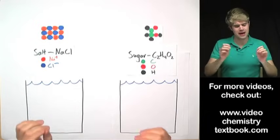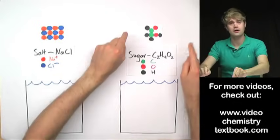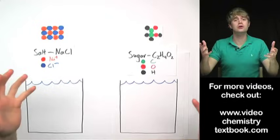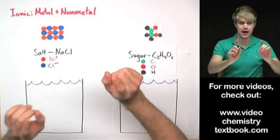It actually depends whether something is an ionic or a covalent compound. It depends on what it would look like when it dissolves. So over here we have salt, and this is an ionic compound.